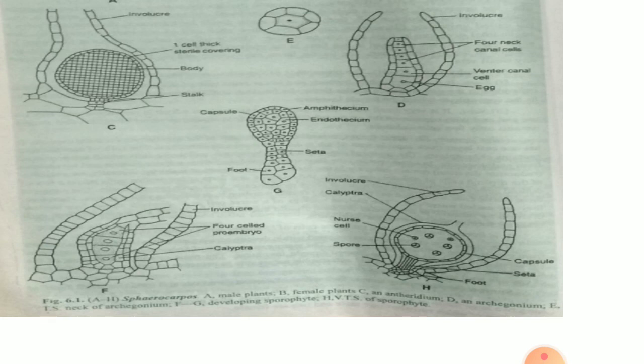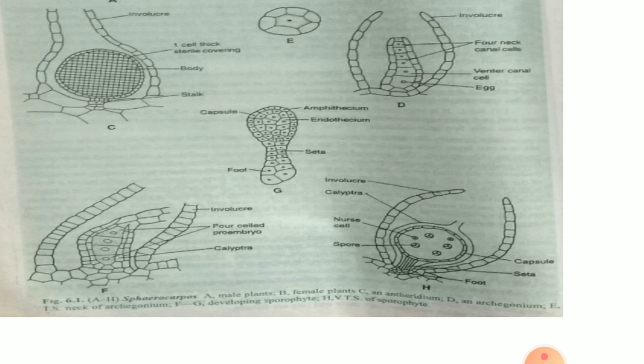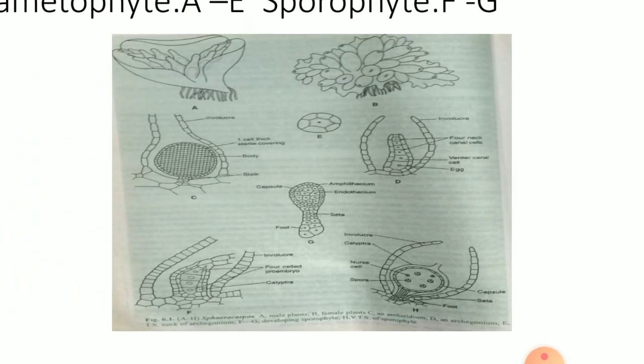Both cells again divide by transverse division and form a four-cell filamentous proembryo. Each cell of the proembryo divides by two longitudinal divisions at right angles to each other, and a 16-cell embryo is produced in which eight cells are arranged in two tiers in the epibasal part and the remaining eight cells are arranged in the hypobasal part. The epibasal part forms the capsule and the hypobasal part forms the small foot and a very small seta.